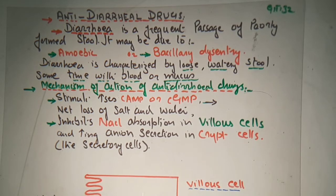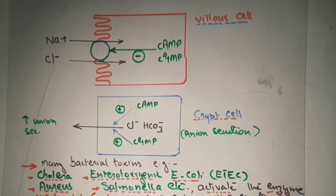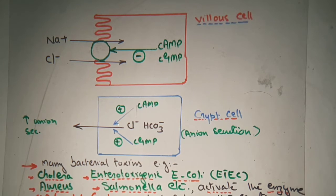This figure shows the villus cells and the crypt cells. The villus cells show the effect of cyclic AMP — they inhibit sodium and chloride absorption in the intestinal villus cells. Whereas the crypt cells are responsible for increasing anion secretion. The negative sign indicates inhibition of sodium and chloride absorption; the positive sign indicates increased anion secretion. Cyclic GMP is responsible for increased secretion of chloride and bicarbonate — that is, anions.